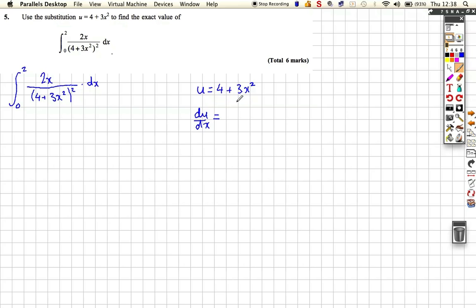So du/dx is equal to 6x. So du over 6x is equal to dx. So we can then replace this with a du over 6x.